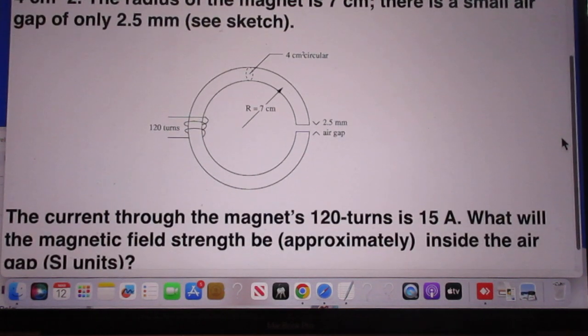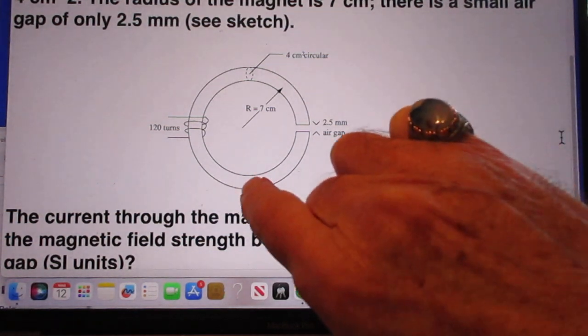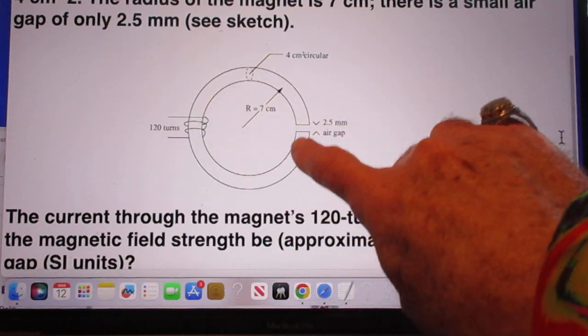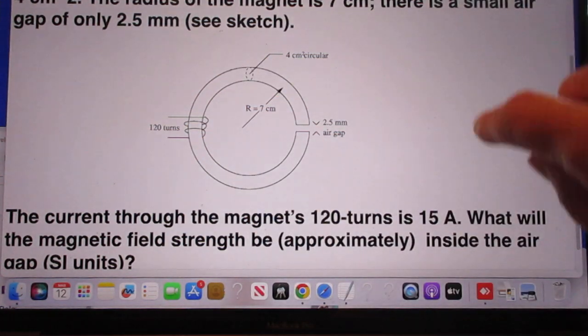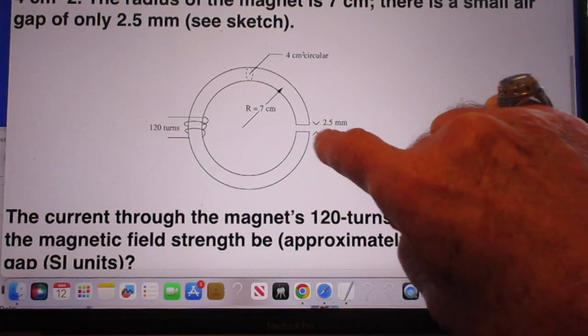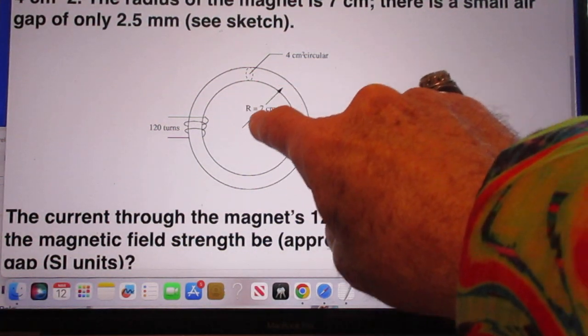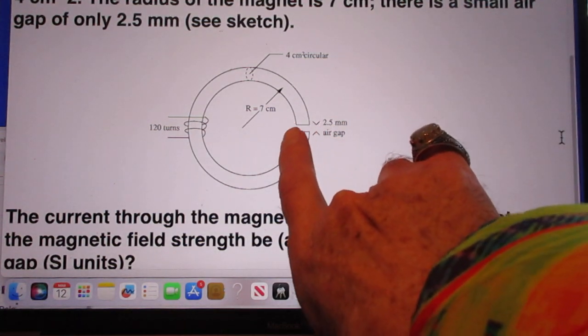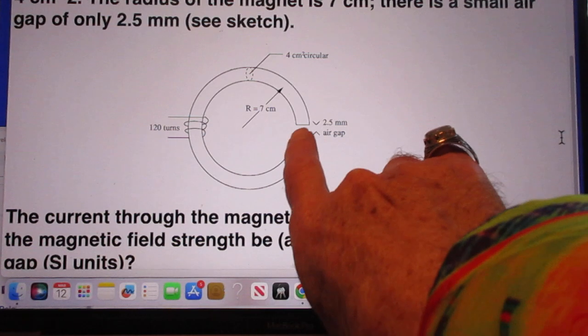Now the sketch is rather faint and I couldn't do any better, so I will leave it for a while so that you have a little bit more time. So here you see the iron. Here you see the radius of 7 centimeters. You see the air gap here of 2.5 millimeters.